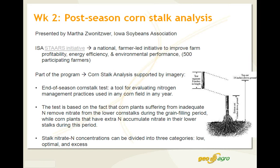If there is extra nitrogen, that accumulates in lower stalks. If there's a lack of nitrogen, that will be taken from lower corn stalks. We'll be seeing how imagery is helping define the sampling points. That is then analyzed and reviewed with a producer to draw useful conclusions for the next season.